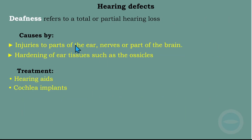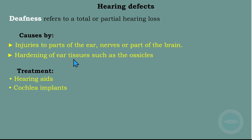The next hearing defect is deafness, which refers to a total or partial hearing loss. The causes include injury to parts of the ear, injury to the nerves, or injury to parts of the brain responsible for hearing. It can also be caused by the hardening of ear tissues such as the ossicles — if the ossicles cannot move, they cannot transmit vibration, causing deafness. Treatment options include hearing aids — devices that help us hear — or cochlear implants, which are devices that help interpret sound.